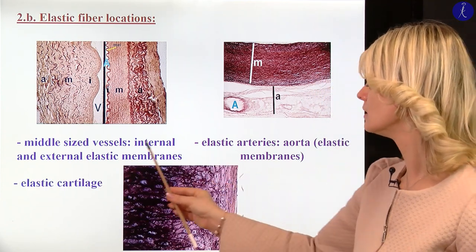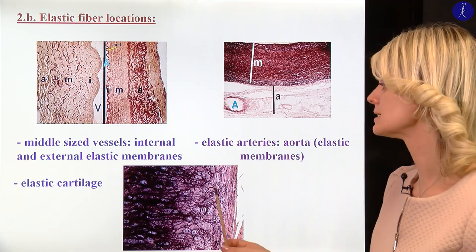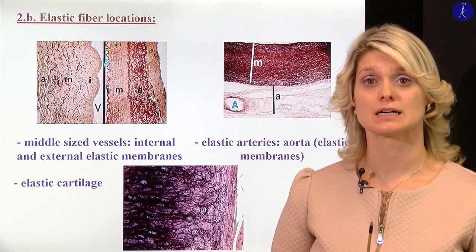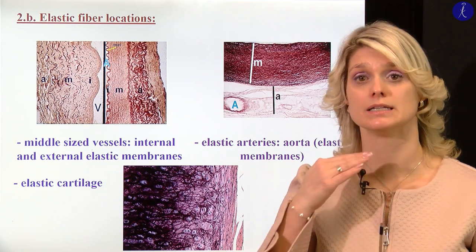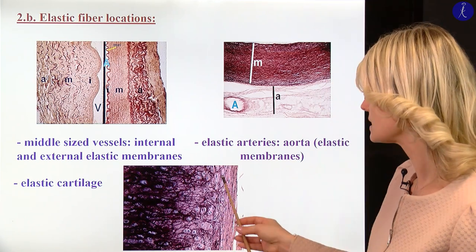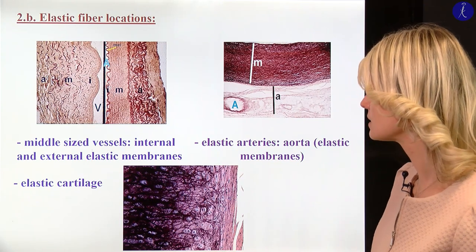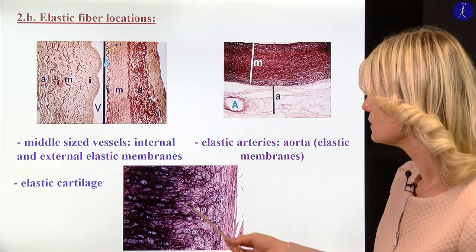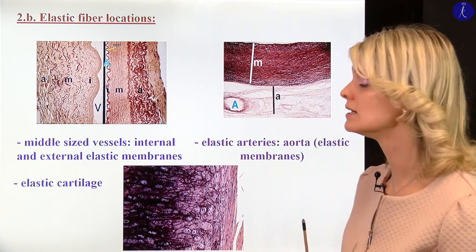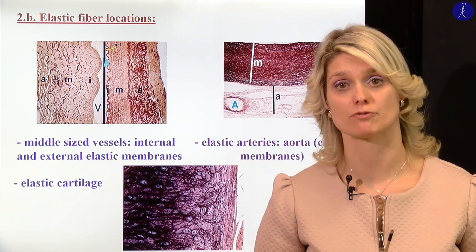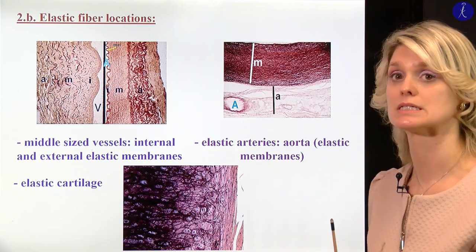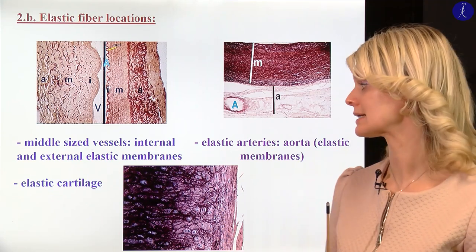The third example in this picture is the elastic cartilage. We can find elastic cartilage in the ear and in the epiglottis. You can see there the cells of the cartilage — the chondrocytes — and between the chondrocytes, the orcein-stained elastic fibers form a meshwork. We will also see this slide in the histology practice.